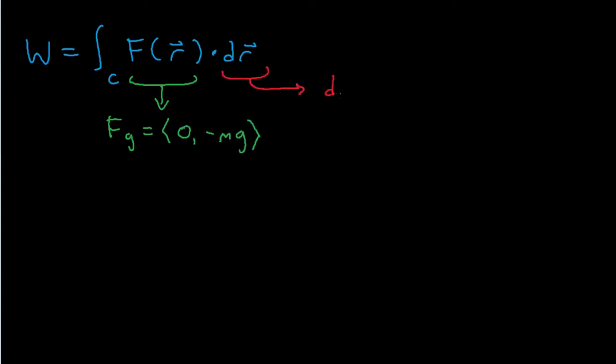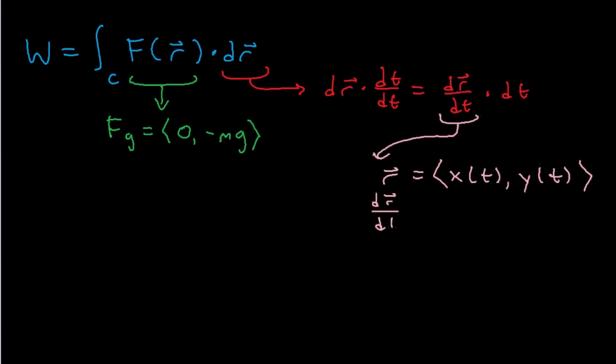For dr, we can use a clever trick where we multiply it by dt over dt, which we can rearrange to dr/dt times dt. So what's dr/dt? Since r is just a vector along the parametric, we can differentiate it to get dr/dt, which is equal to <dx/dt, dy/dt>.